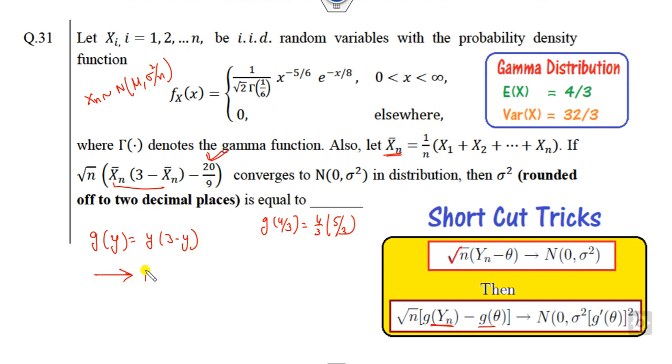Then it will converge to the normal distribution with sigma squared and g dash of theta. So what is g dash? You can find g dash is 3 minus 2y. What is g dash of the mean, which is 4 by 3? The answer is 3 minus 8 by 3, which is 1 by 3.